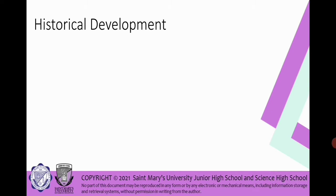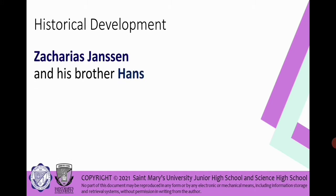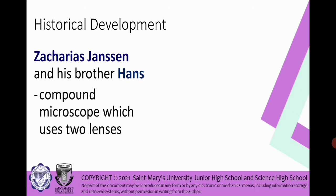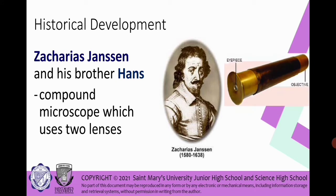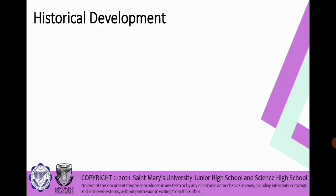Let's further deepen our understanding on the historical development of a microscope. The first one uses microscope: we have Zacharias Janssen and his brother Hans, wherein they use a compound microscope which uses two lenses. That's his picture or image and this is the example of microscope that they use. There is the eyepiece and the objective. Next.